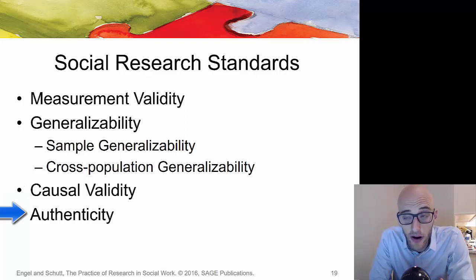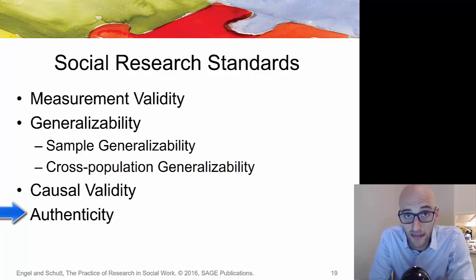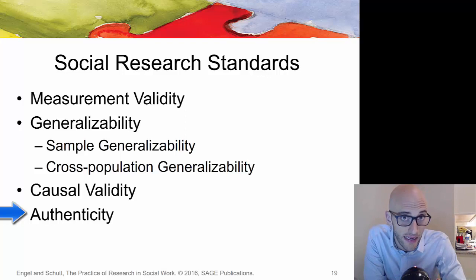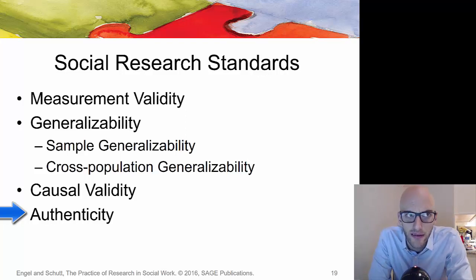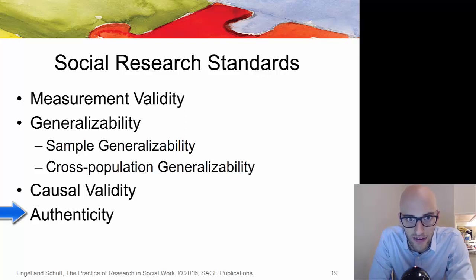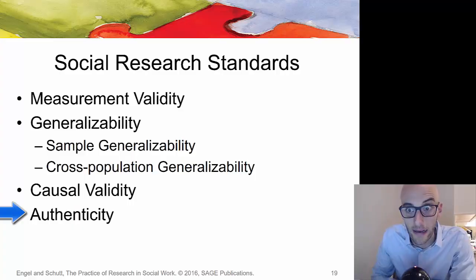Regarding authenticity, the book discusses the idea that social science should focus on how participants view the social world, rather than the social scientist's own interpretation. Not just the person writing the paper, but the people who are subjects of the study. The belief is that authenticity should really lie with the population being studied.